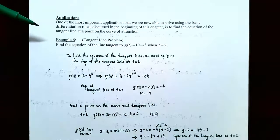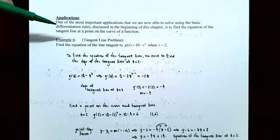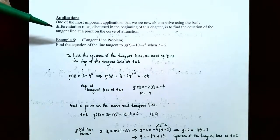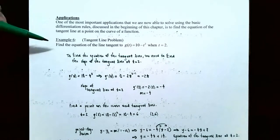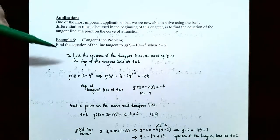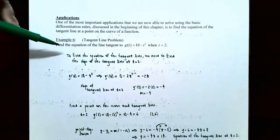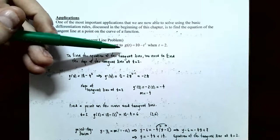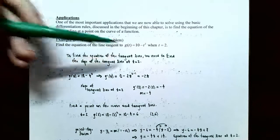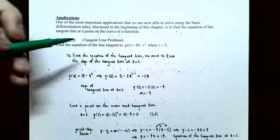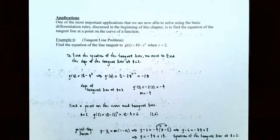One of the most important applications we'll be able to solve using the basic differentiation rules discussed earlier is that we can actually now find the equation of the tangent line at a point on the curve. Example six: find the equation of the tangent line to the function g of t equals 10 minus t squared, when t equals 2.